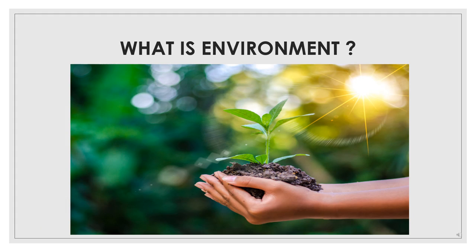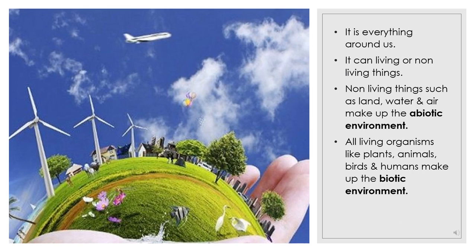Now first of all, what is environment? Do you think that different types of trees or forests make our environment? No, it does not mean so. Environment means everything that is around us — it can be living or non-living things. Non-living things such as land, water and air make up the abiotic environment. All the living organisms like plants, animals, birds and humans make up the biotic environment. All these things are the elements of environment — meaning all these things together make up the environment.